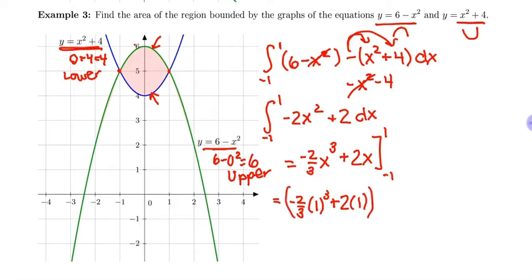So you can use your calculator for that, or that's just 2 minus 2 thirds. Either way is fine. Minus, I'm going to plug in my lower bound, negative 2 thirds times negative 1 cubed plus 2 times negative 1.